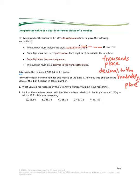Jake wrote the number 2,531.64 on his paper. Amy wrote down her own number and looked at the digit 5. It's always a good idea to take some notes. Jake's number: he wrote 2,531.64.